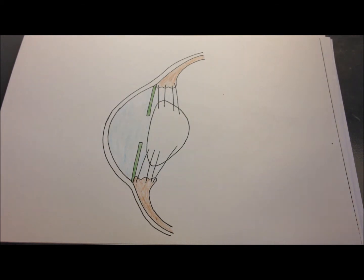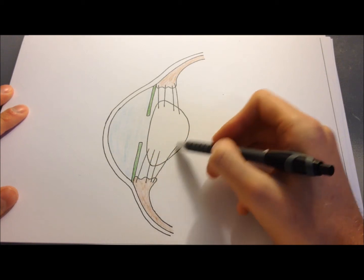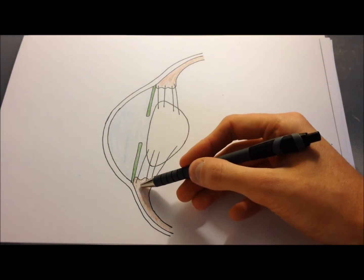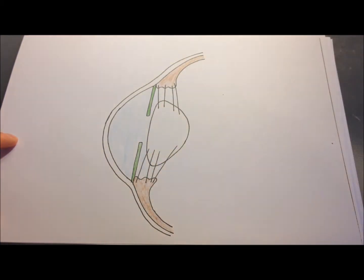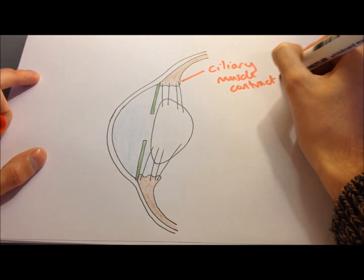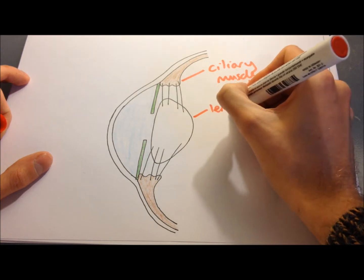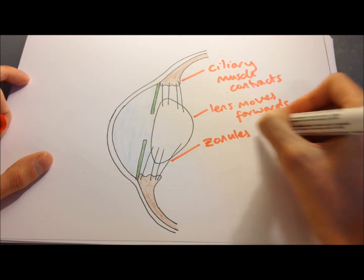The shape of the lens can be adjusted to allow for accommodation of objects at different distances. It's the ciliary muscles that are responsible for this, attaching to the lens by zonular fibres. During accommodation, the ciliary muscle contracts, pulling the lens forward and relaxing the tension in the zonular fibres, which makes the lens fatter and more powerful.